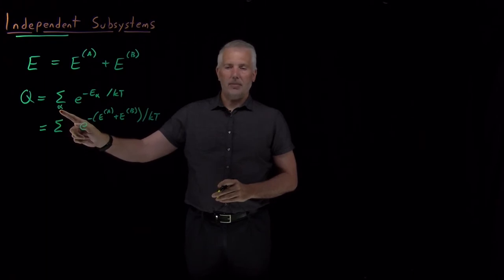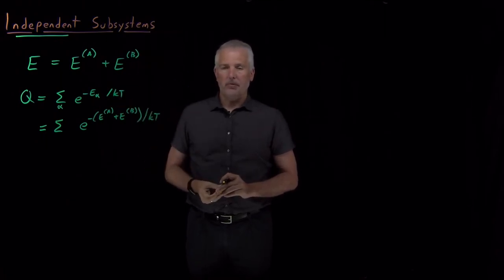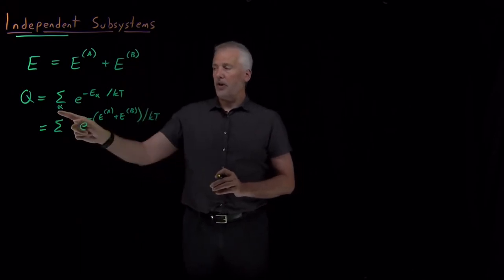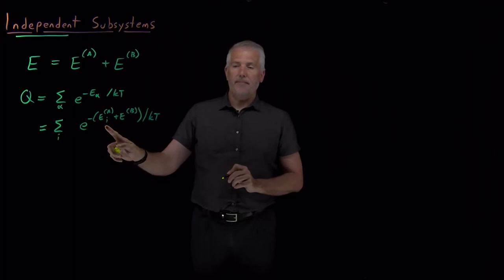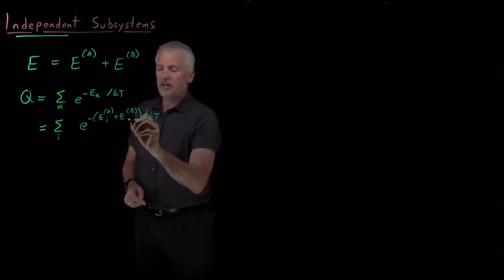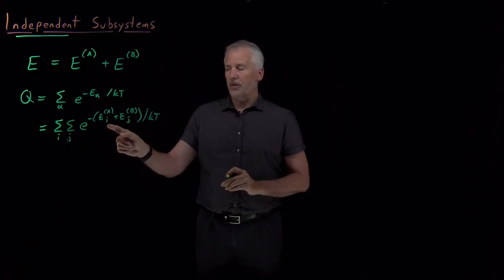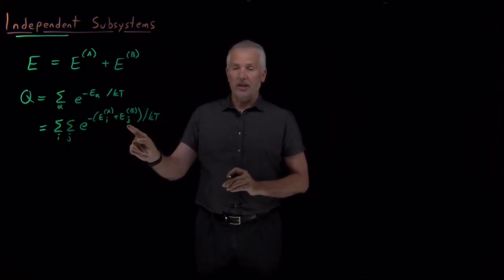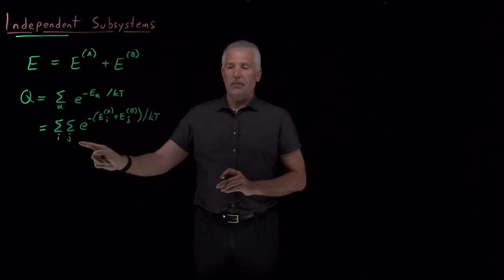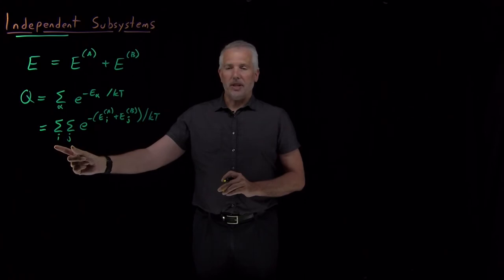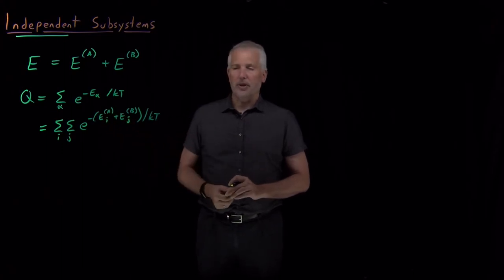The sum is over all the states that the entire system can have. Part A — maybe it's a molecule — can have energy levels 1, 2, 3, 4, 5. Part B — the same or a different type of molecule — can have its own different energy levels. So the sum over all the possible states the system can occupy needs to include all the states i that part A can have, as well as all the states labeled j that subsystem B can have. I need to account separately for all the ways A can have some energy and all the ways B can have some energy.